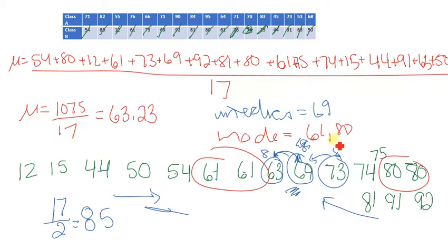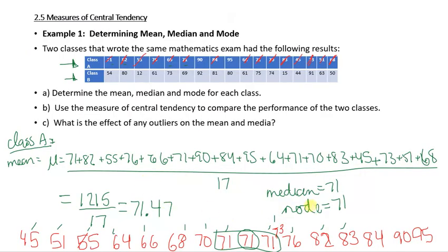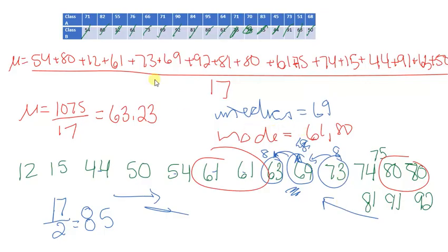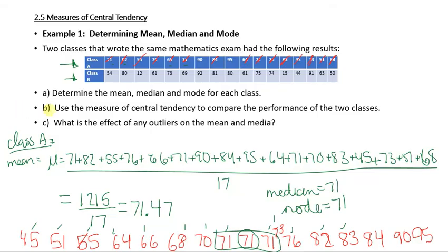So let's actually take a look at the median. The median for class B is 69. The median for class A was 71. So again, higher for class A. Now the mode for class A was 71, and the mode for class B is 61 and 80.